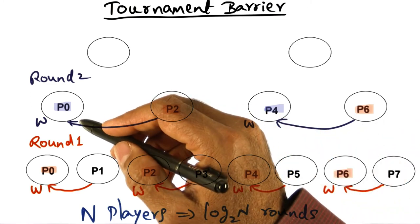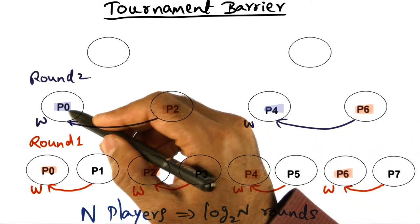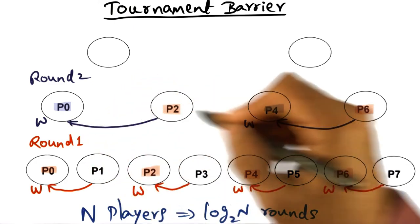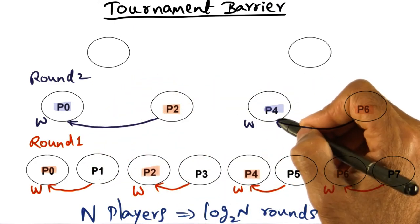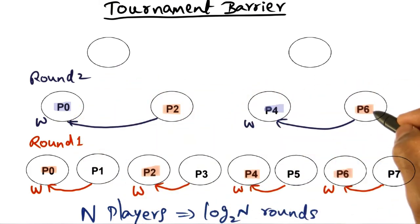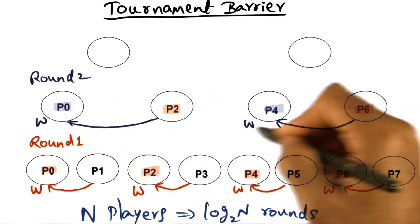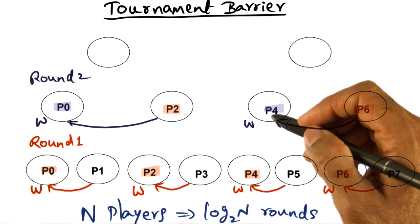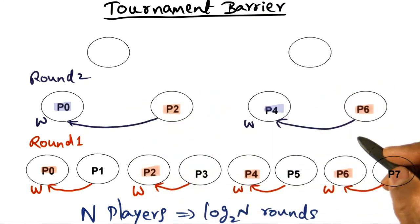And so essentially what that means again is that P0 and P4 can spin on a statically determined location in their processors. And P2 and P6 respectively will come over and let the other guy know that won the match, at least for this round. So that is the end of the second round.